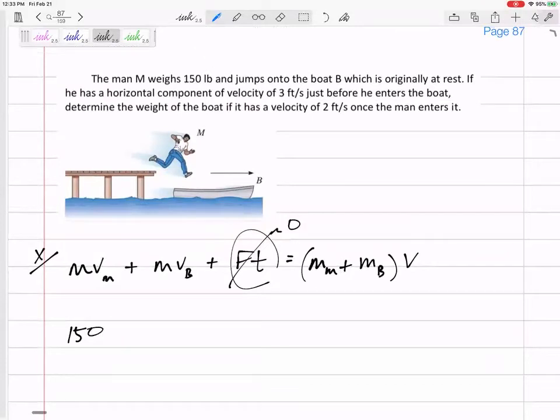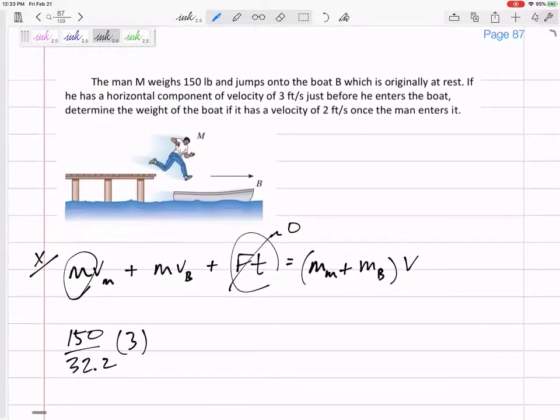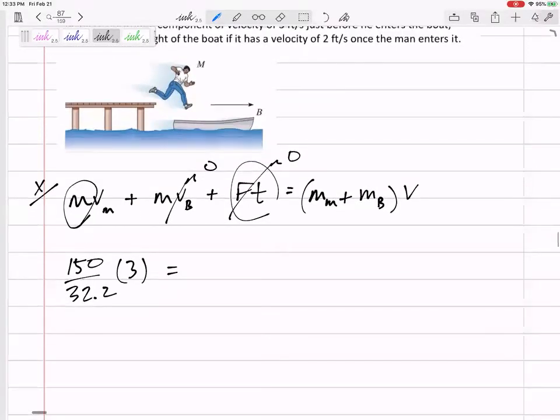Okay, so let's do this right here. The mass of the man, 150. You know, this equation asks for mass, so I'm about to divide it by 32.2. We'll see how that works out. It has a velocity of 3. The boat started from rest, so that's all the momentum we have. There's no external impulse. And then now we would have 150 over 32.2 plus the weight of the boat over 32.2. And they're all moving together at 2.